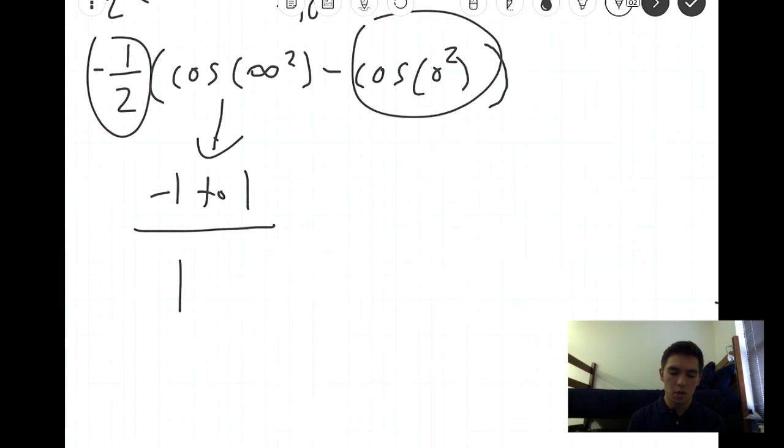And so what you get when you distribute this one half, and this is cosine of infinity minus one, is you get an interval from zero to one. But basically, that means this improper integral diverges.